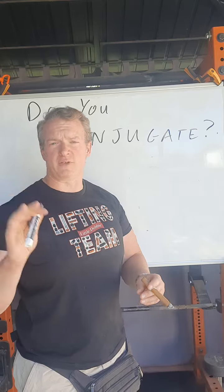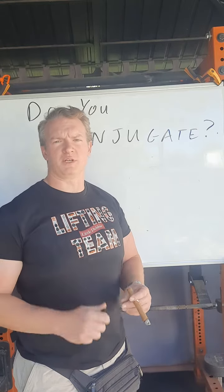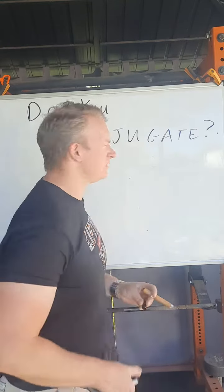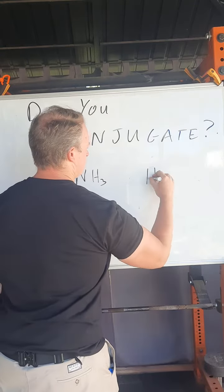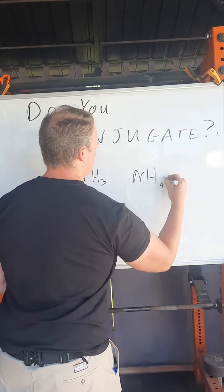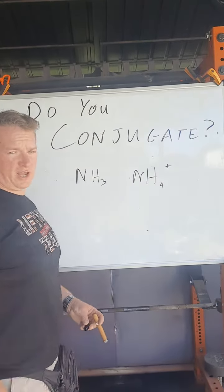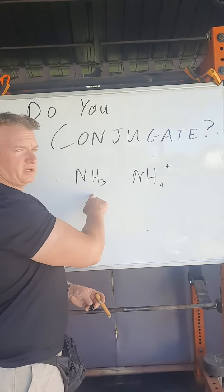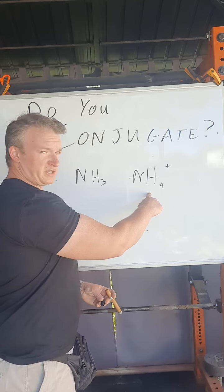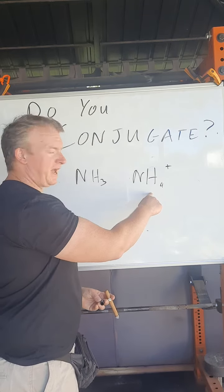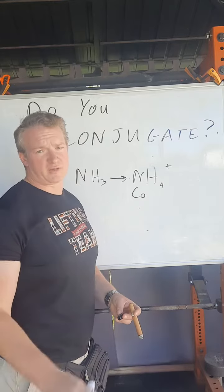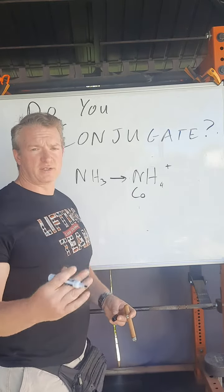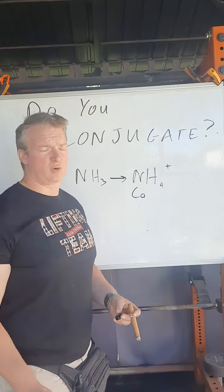Conjugate acids and bases are identified by very similar molecular formulas but differ by the number of protons present. For example, this is a conjugate acid-base pair. This one is the base and this one is the conjugate acid. Conjugate refers to it being a product of the chemical reaction. Acids and bases refers to its predicted chemical behavior.